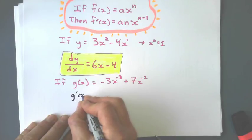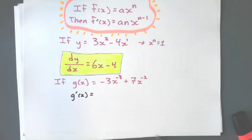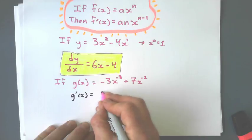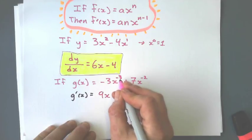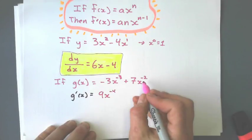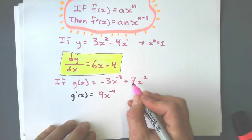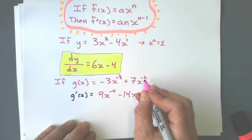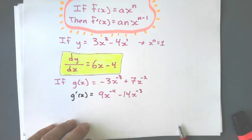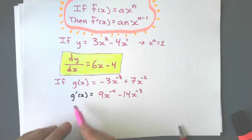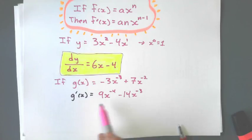So, to differentiate this one, we do the same thing we've done. Take the exponent, put it in front, multiply it to the coefficient, negative 3 times negative 3 is 9, and take 1 off of the exponent. Negative 3 minus 1 is negative 4. Same thing here. Bring the exponent, multiply it in front to the coefficient, negative 2 times 7 is minus 14, and 1 less from negative 2. Negative 2 minus 1 is negative 3. Okay? So that's the gradient function, that's the derivative function, g dash x, whatever you want to call it, but there's lots of names for that one polynomial.